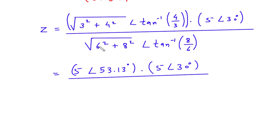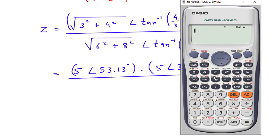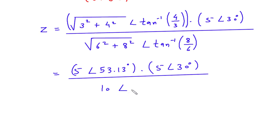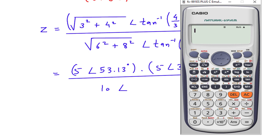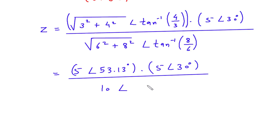Now we will solve √(6² + 8²), which is 10, at an angle of tan⁻¹(8/6). And tan⁻¹(8/6) is 53.13 degrees.